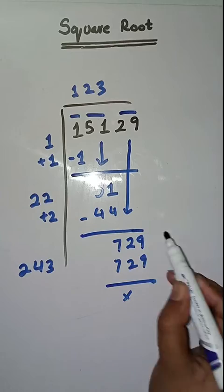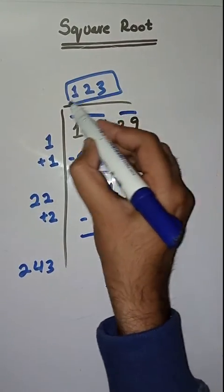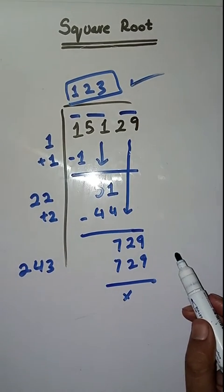So yeh completely solve ho chuka hai. So square root of 15,129 is 123.